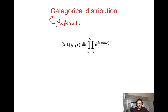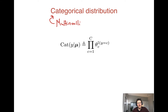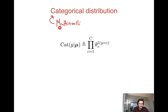Another name for the categorical distribution is the multinoulli distribution, drawing the analogy between the Bernoulli distribution — which is the distribution over a binary random variable, named after the famous mathematician Bernoulli — and the multinoulli, which is basically the same thing but for a variable that can take on more options. You'll see either multinoulli or categorical as the name for this distribution.